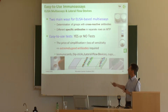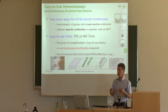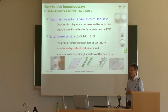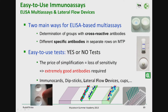There is a move towards easy-to-use immunoassays. There are actually two main ways for ELISA-based multiassays. One is the determination of groups with cross-reactive antibodies — antibodies which are able to detect both acetylated deoxynivalenol, nivalenol, and deoxynivalenol. That is one way of having a multiassay in a total toxin approach.